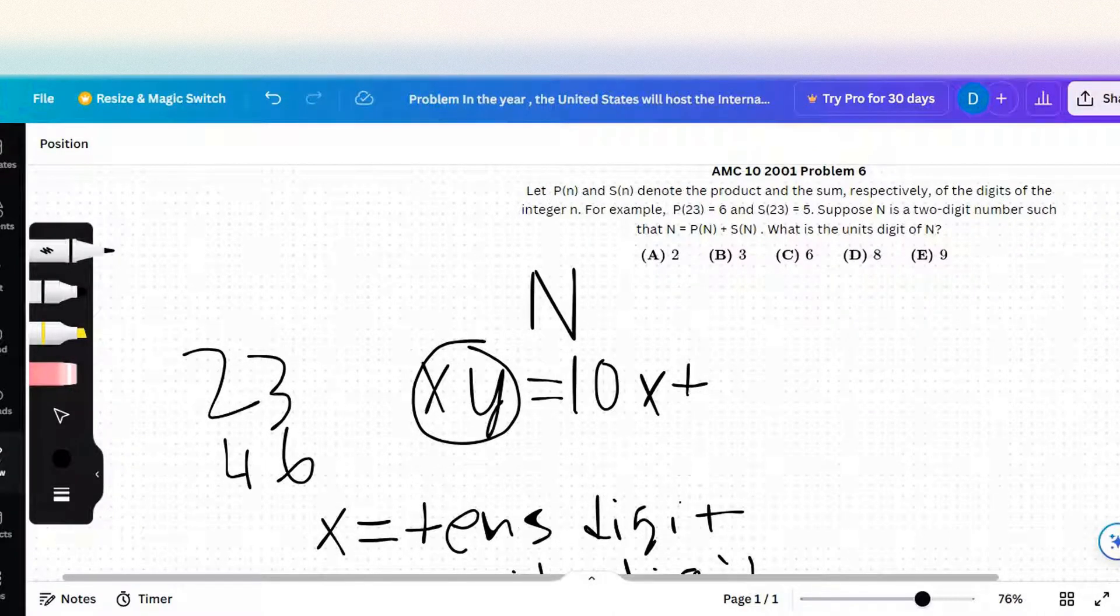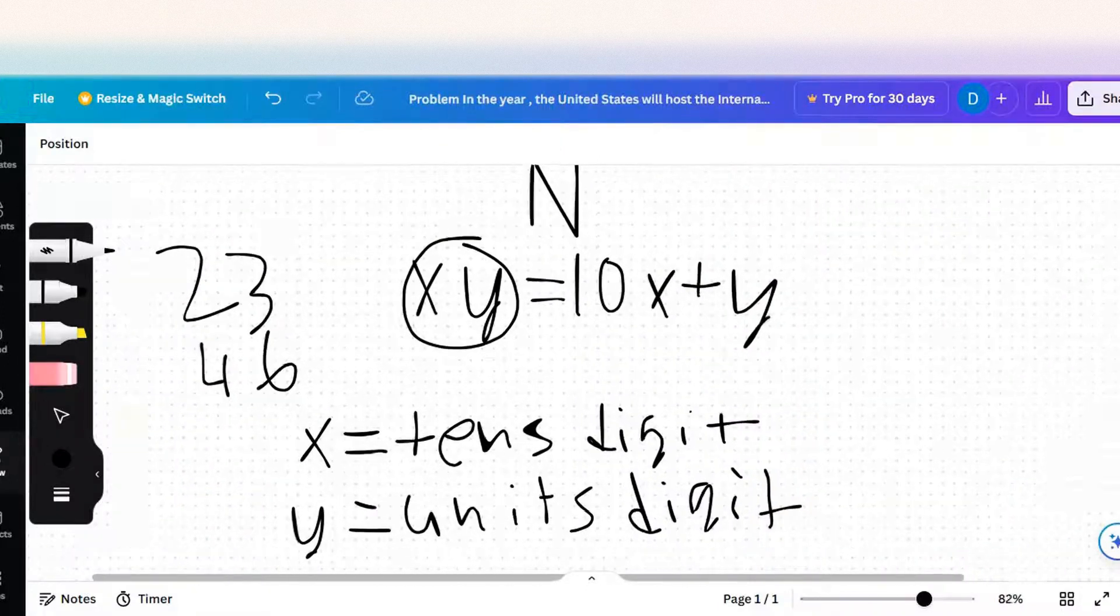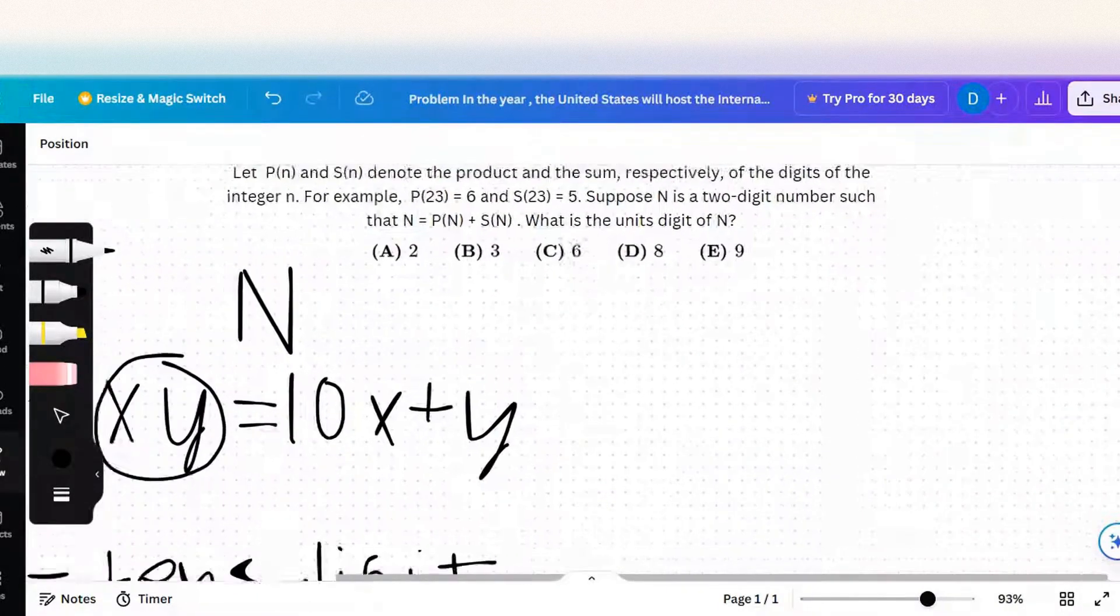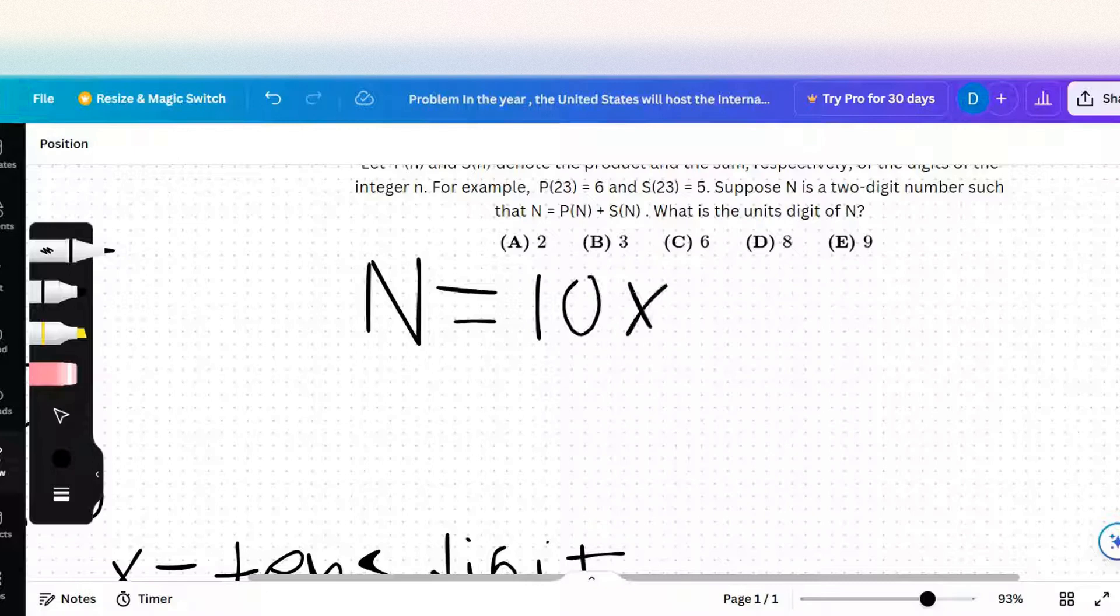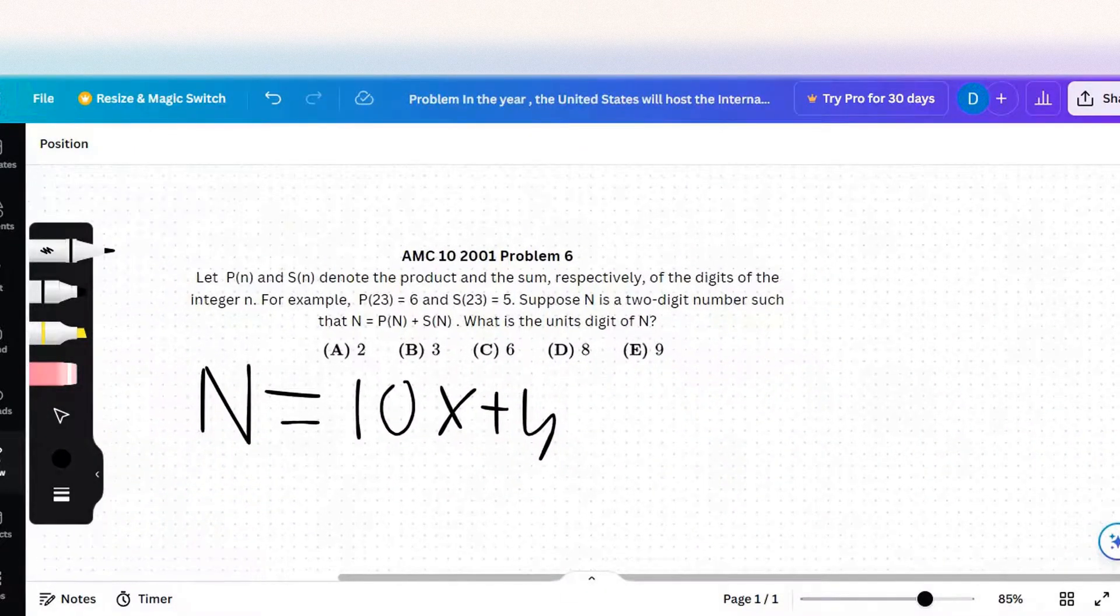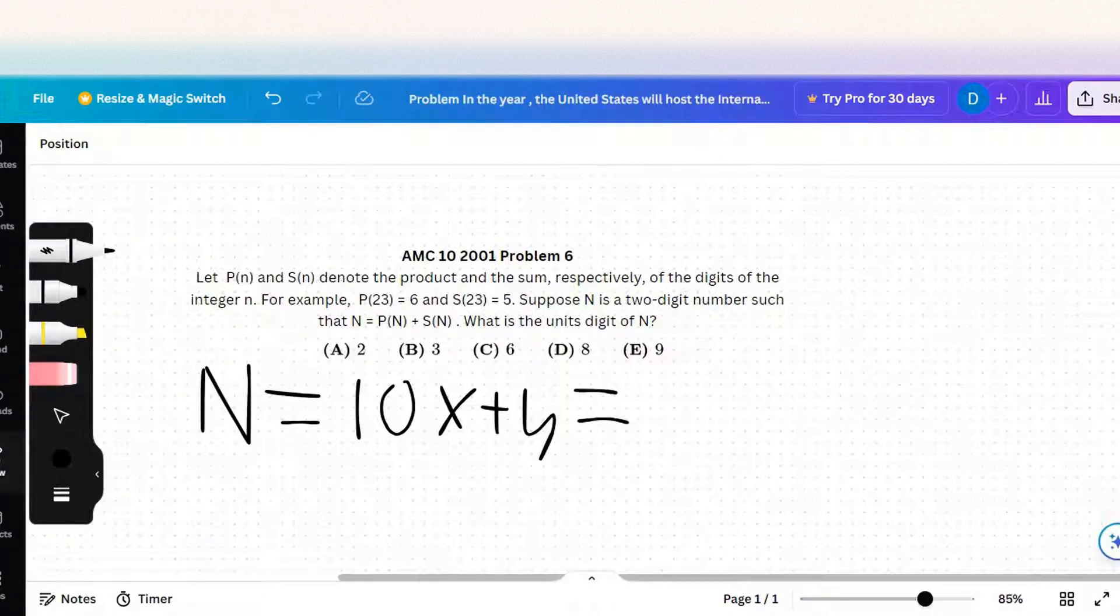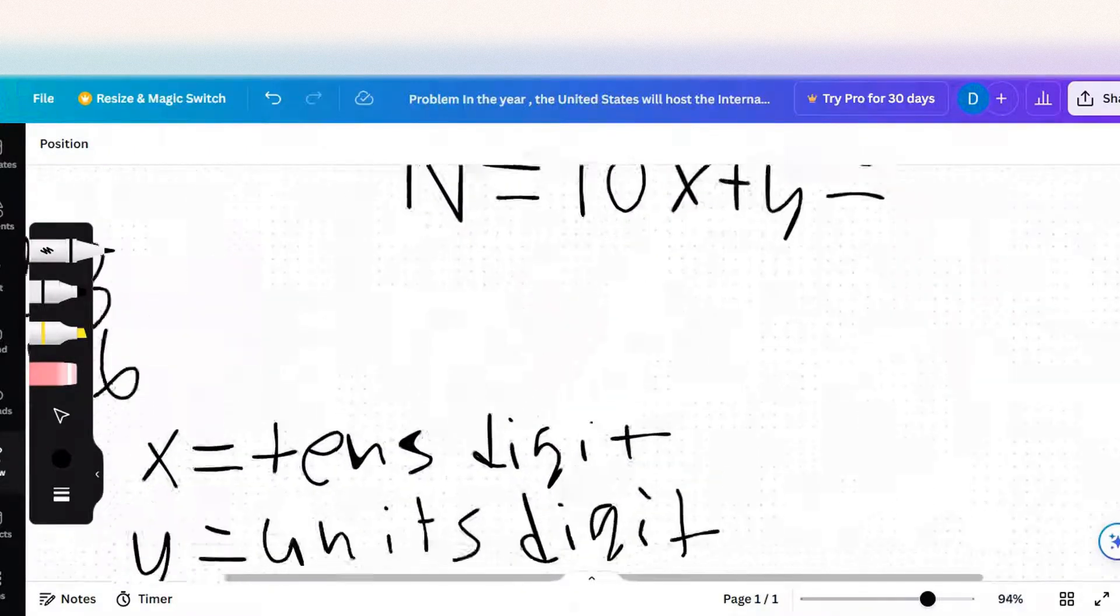So the actual number equals 10 times its tens digit and 1 times its units digit. The number is equal to 10x plus y. And what else we have is P(n). What is P(n)? It's the product of the digits.